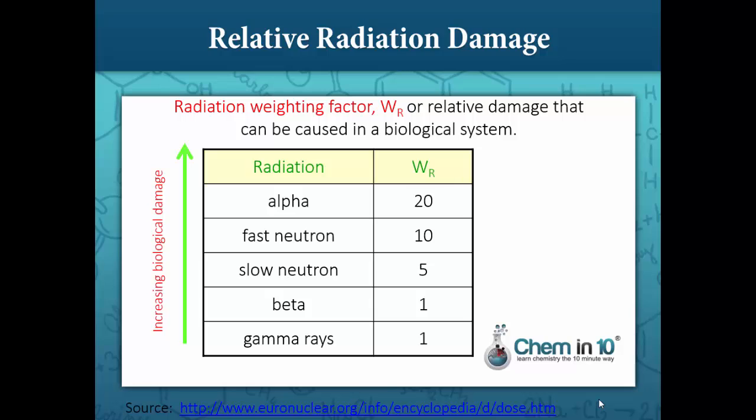Whereas we see that beta particles and gamma rays are the least damaging, they cause the most concern because they are the most difficult to protect against.